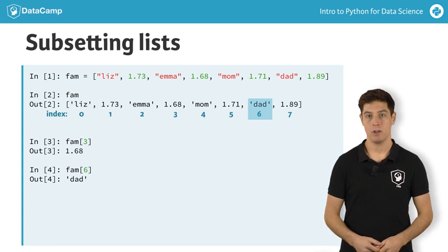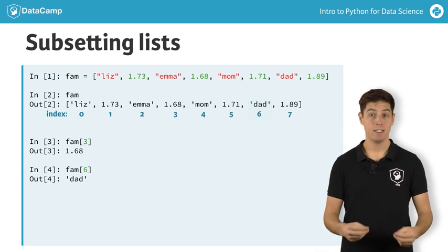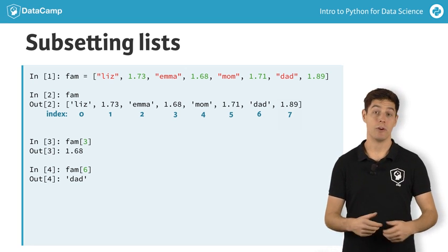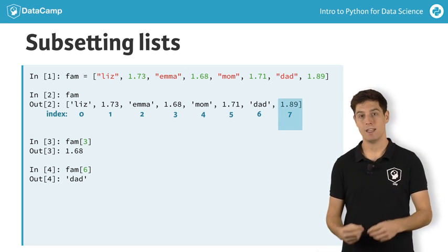You can also count backwards, using negative indexes. This is useful if you want to get some elements at the end of your list. To get your dad's height, for example, you'll need the index minus 1.